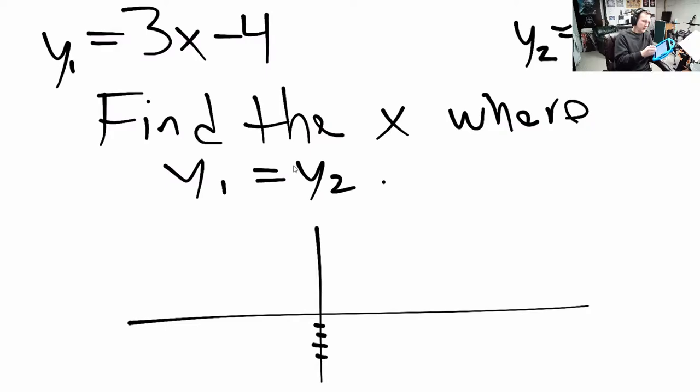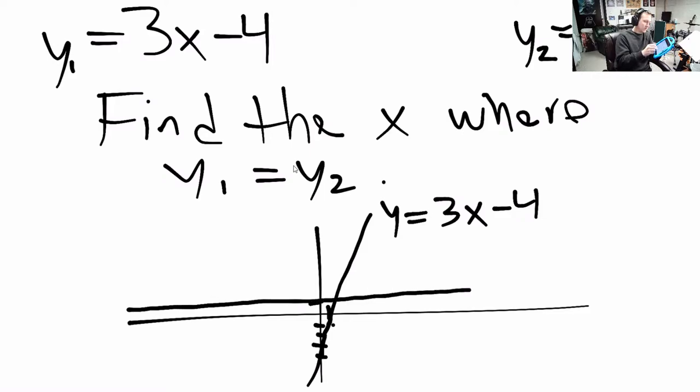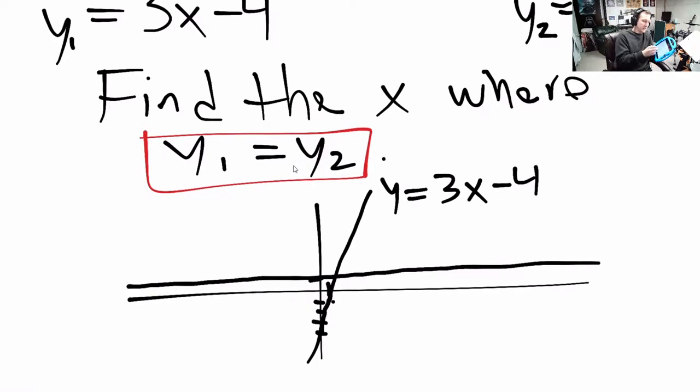Something like this. This is y equals 3x minus 4. The line y equals 1 is at a height of 1, just constantly y equals 1. Where are these two lines equal? That's right here at the intersection point.